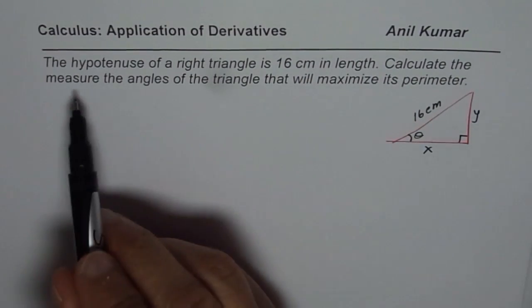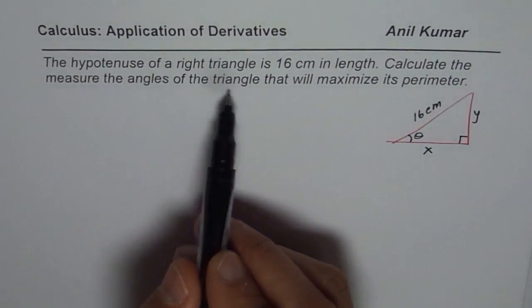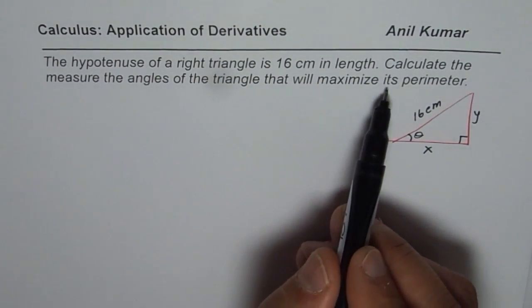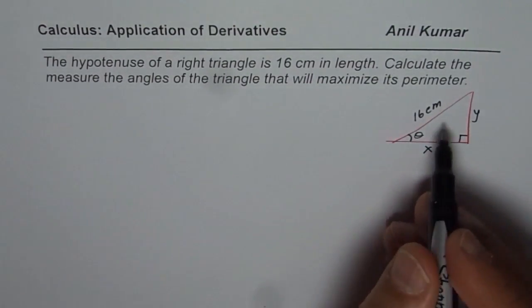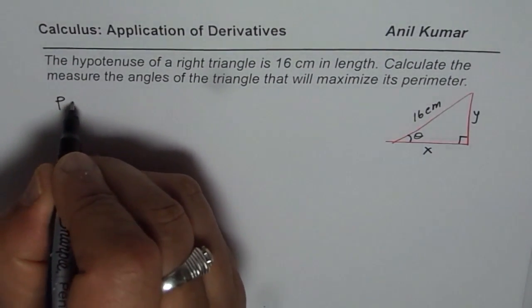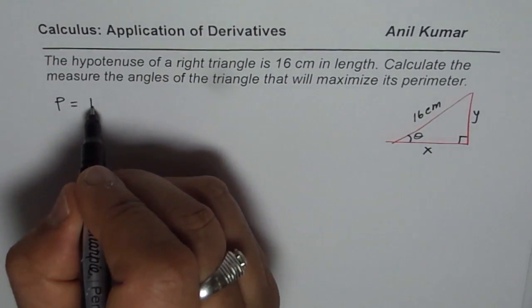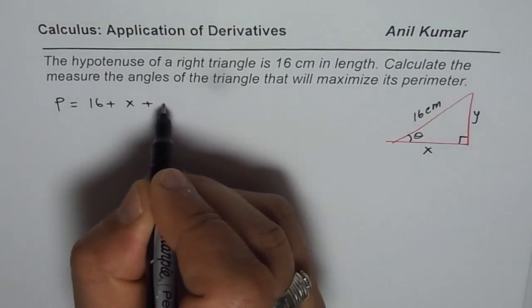Now, we need to calculate the measure of angles of the triangle that will maximize its perimeter. What is the perimeter of this triangle? Perimeter of the triangle is 16 cm plus x plus y.